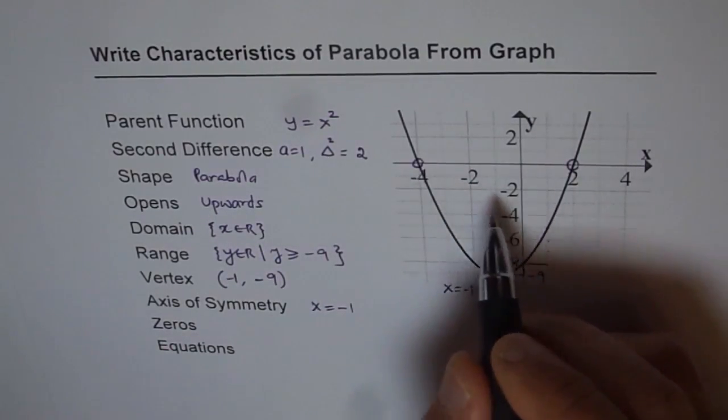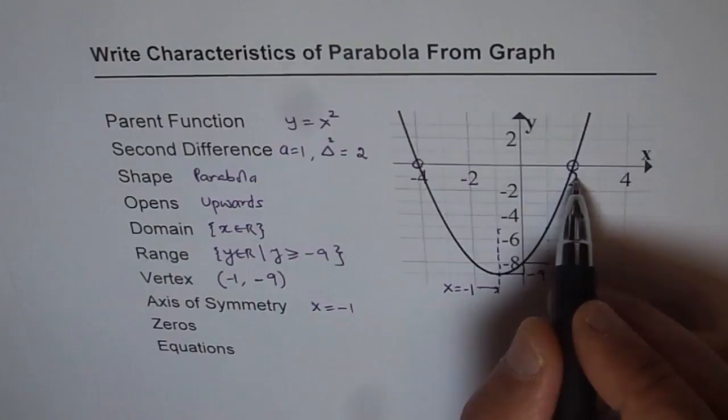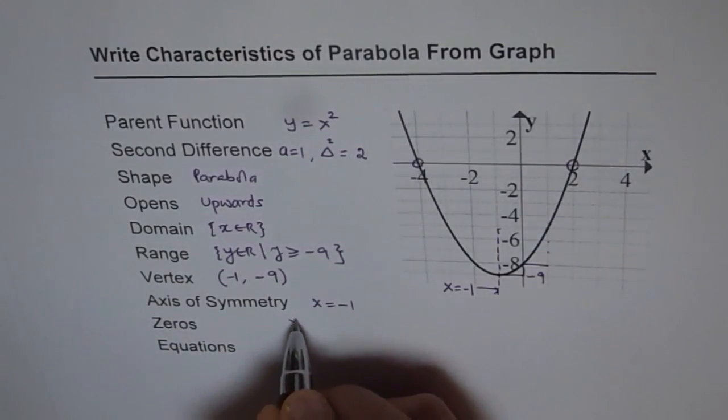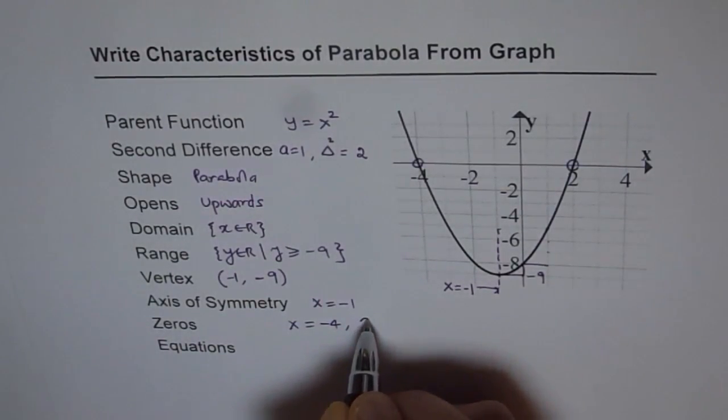Zeros, so we have two zeros right there. One is at minus 4, the other one is at 2. So zeros are at x equals to minus 4 and at 2.